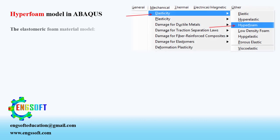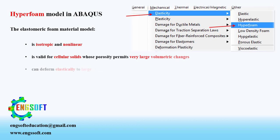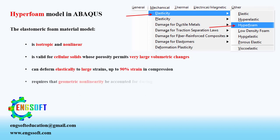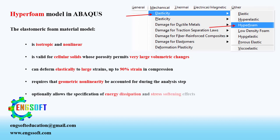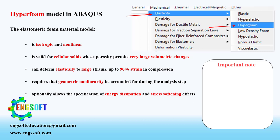The hyperfoam model is suitable for elastomeric foam materials that are both isotropic and non-linear. The main use for it is instances where there are large volumetric changes in compression, up to 90% strain. Though it is purely elastic, it is not suitable for foams which undergo permanent deformation. Geometric non-linearity must be accounted for during the analysis step. You can optionally include energy dissipation and stress-softening effects in the hyperfoam model.